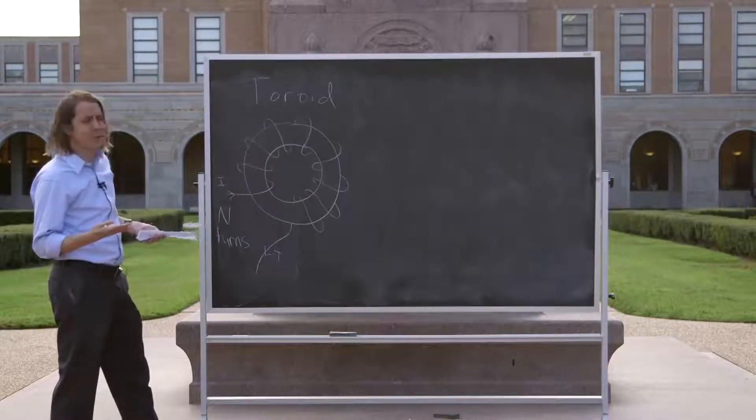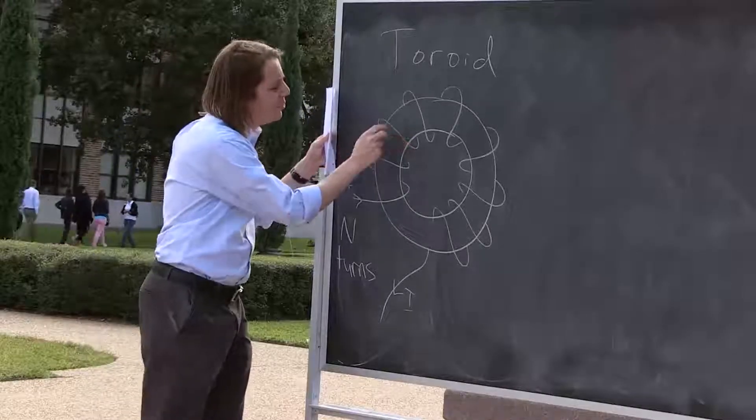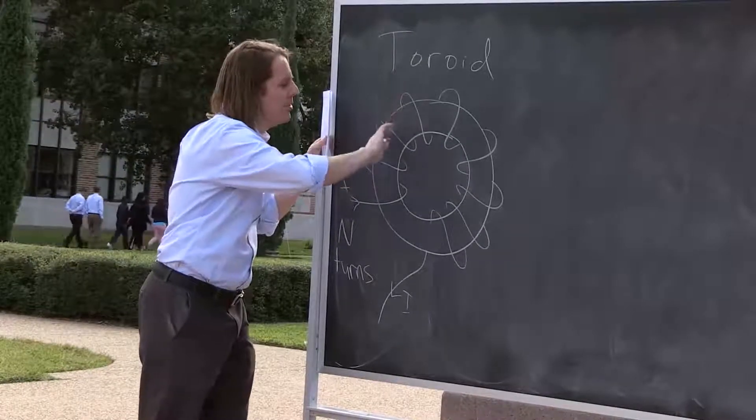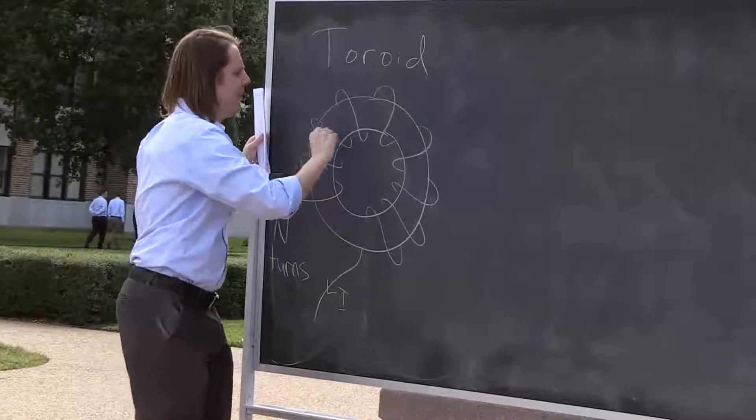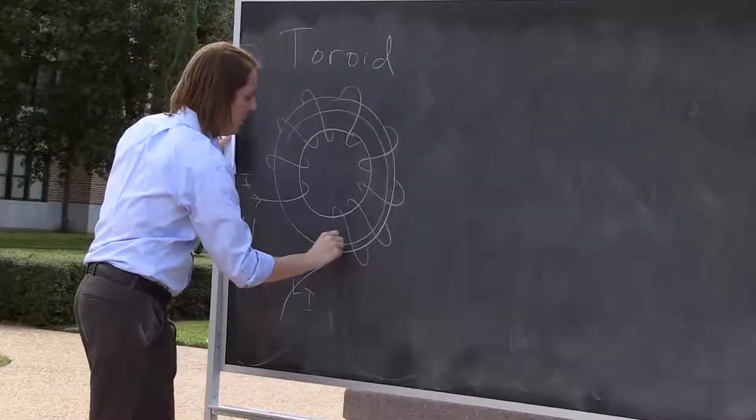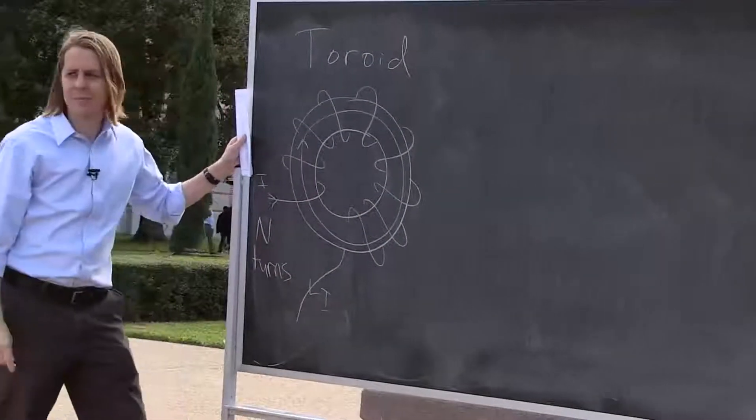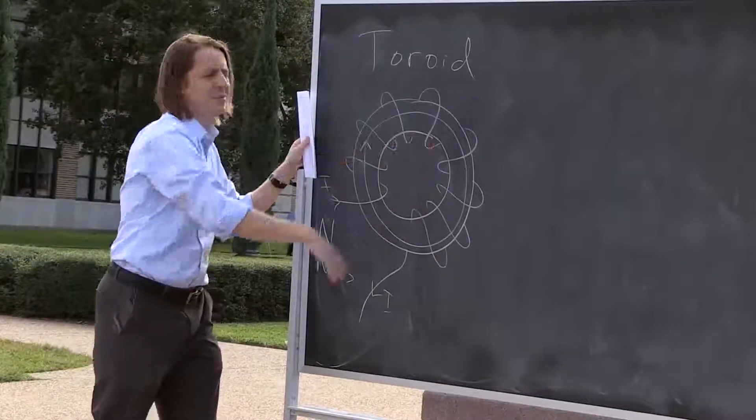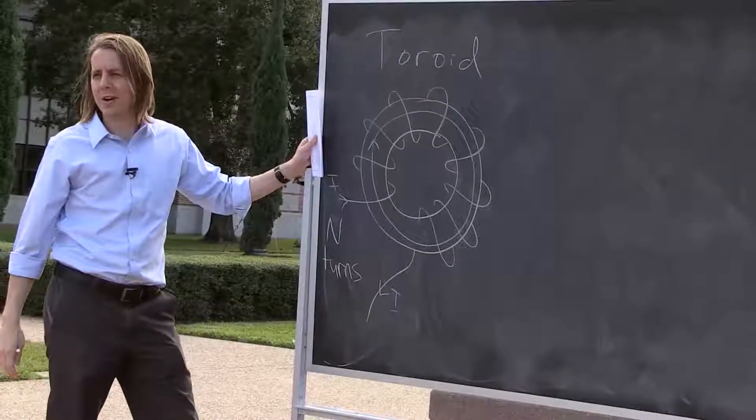So you can imagine this is going to do something pretty similar. This individual loop would make a field going around, and you add this one to make a field going around. Basically this thing makes a magnetic field that goes around like that. It makes a magnetic field inside of whatever material you're using for the torus.